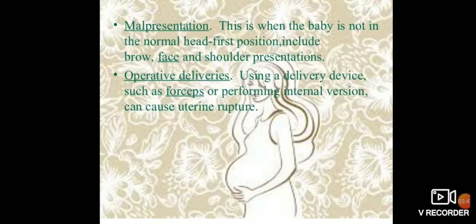Malpresentation, when the baby is not in the normal head-first position — including brow, face, and shoulder presentations — is another cause. Operative deliveries using devices such as forceps or performing internal maneuvers can also cause uterine rupture. External or internal version is also a contributing cause.